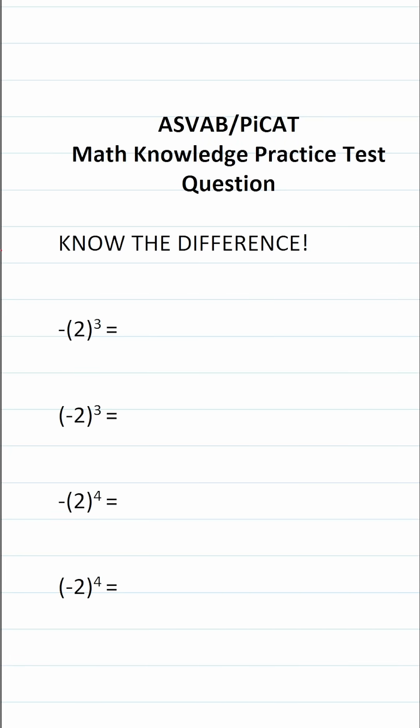For this math knowledge practice test question for the ASVAB and PyCat, I want to take a look at a question that can sometimes trip people up, and it involves exponents and negative numbers. More specifically, I want you to pay close attention to where the negative value is as we work each of these out.